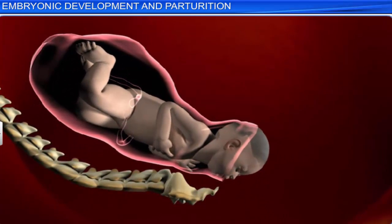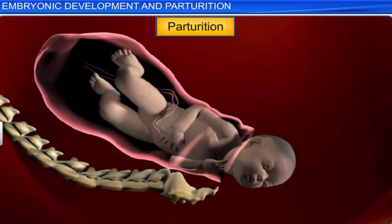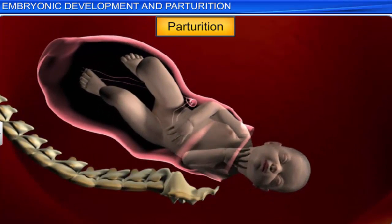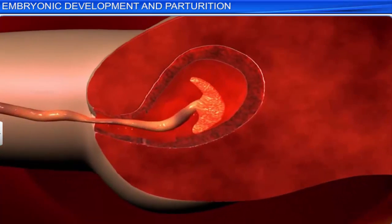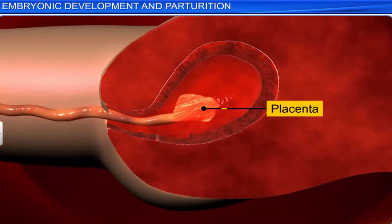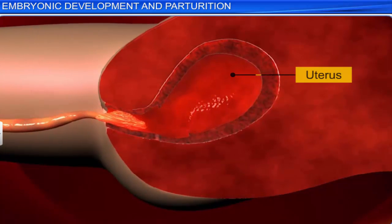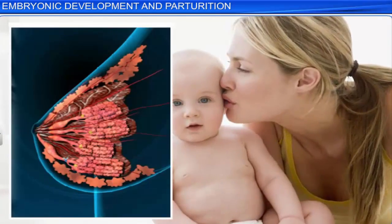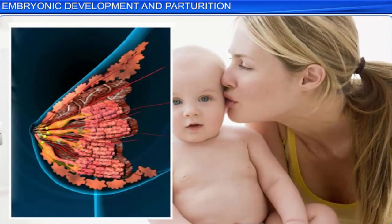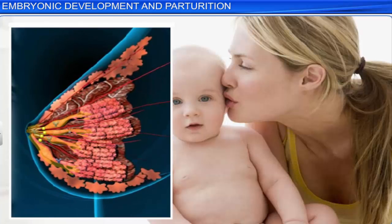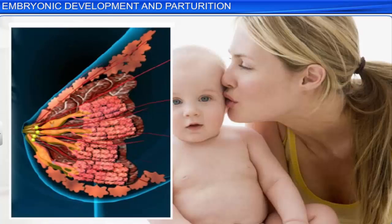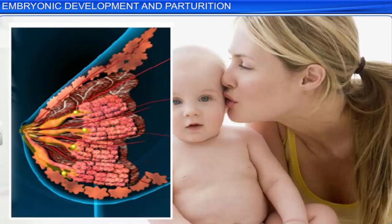This process of delivery of the fetus is called parturition. Immediately after the birth of the baby, the placenta is expelled from the uterus. Soon after birth, the baby needs to be breastfed by the mother as early as possible, because immediately after parturition, the mammary glands start secreting colostrum — a form of milk that is rich in antibodies and improves the immune system of the baby.